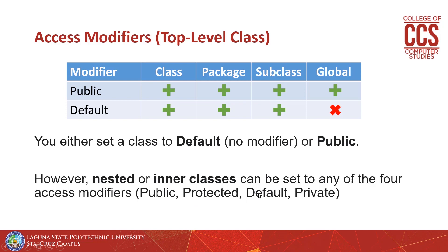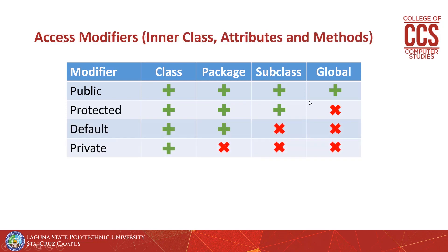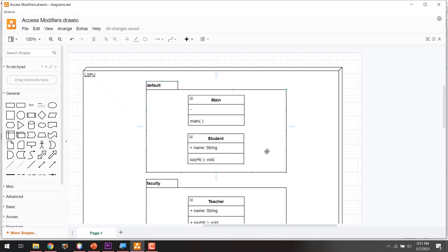The four access modifiers are: public, protected, default, and private. Aside from inner classes, attributes and methods can also be set to any of these four modifiers. Here we have a class diagram that has two projects.